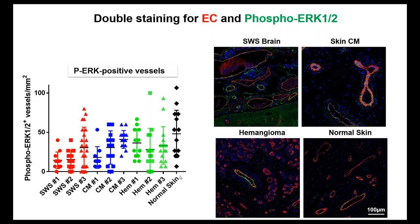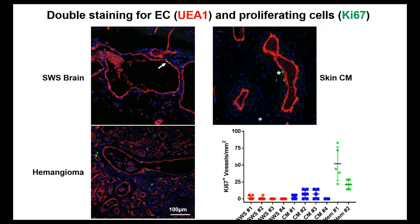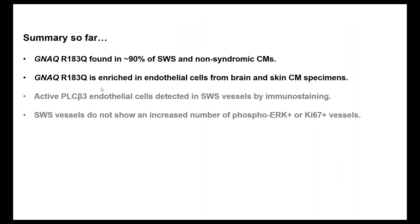Lan also asked whether these lesions are proliferative. There are some Ki67-positive cells in the brain and skin capillary malformations. Hemangioma is our positive control with many Ki67-positive cells, as is well known. When we quantify Ki67-positive vessels per millimeter squared across many samples and biological replicates, the Sturge-Weber CMs look pretty quiescent compared to hemangioma.